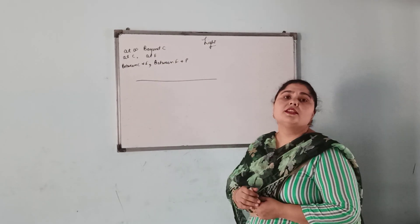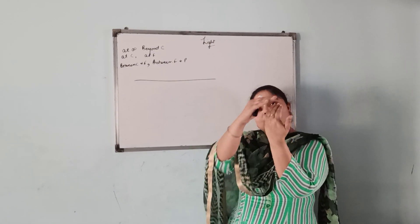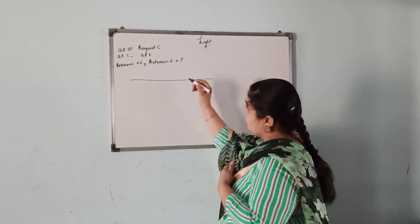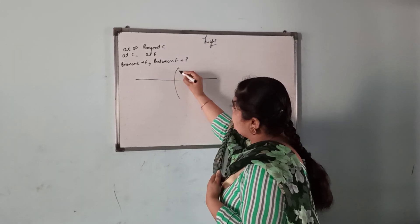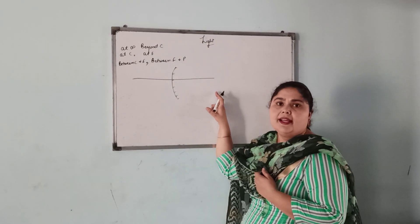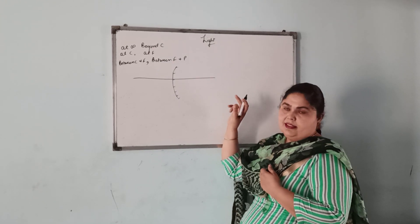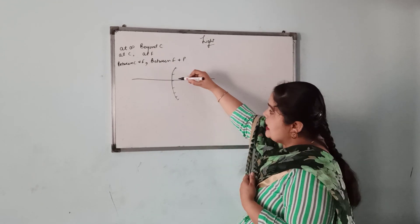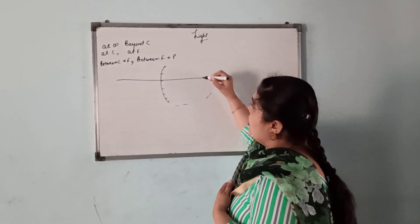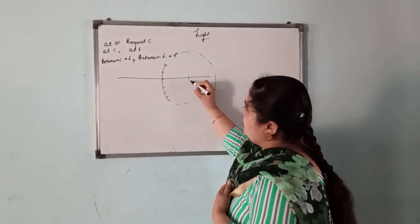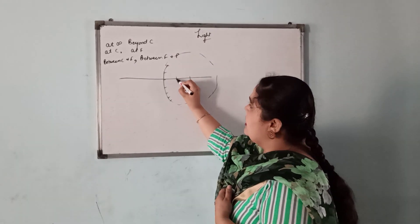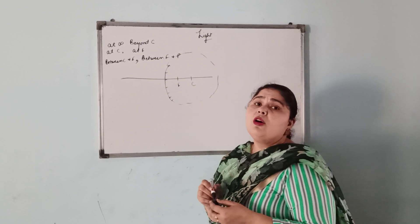Today we will discuss about the convex mirror. This is your convex side. I will make a convex mirror for you. This is your convex mirror. This is called the principal axis. As the convex mirror is toward this side, the center of curvature is also on this side, as well as the focus.